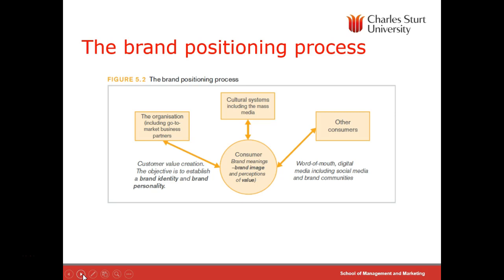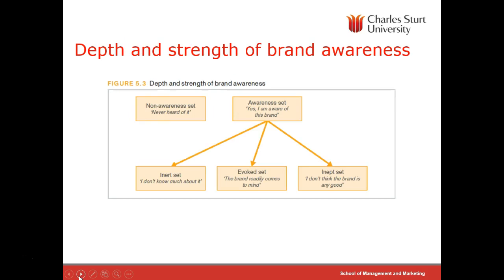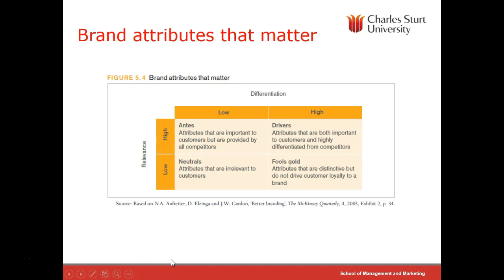In brand positioning, we look at how the consumer sees our brand in relation to the organisation, the way it's portrayed in mass and social media, and the way it's portrayed by other consumers. Another consideration is where people are in their decision set — they may never have heard of our brand, or they may be aware but not think the brand is very good. We might need a long-term strategy, as was the case with Korean and Japanese car companies, to move brands more into the evoked set. Focusing on brand attributes that matter and move you from one area to another is important here.